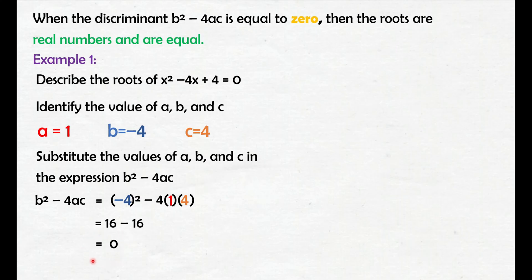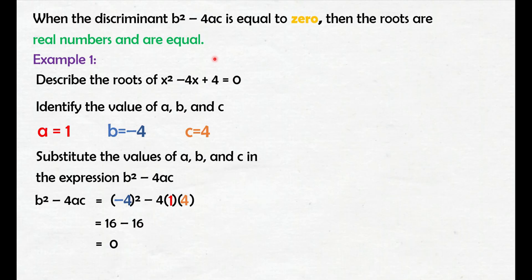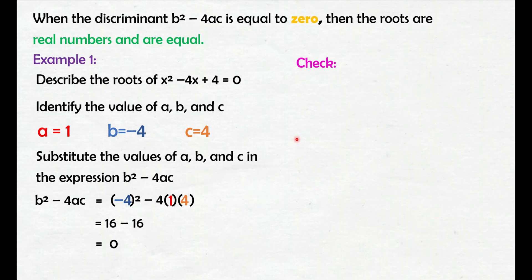Yung discriminant natin ay 0. Based dun sa definition natin, kapag yung discriminant natin ay 0, makakakuha tayo ng real numbers and are equal na roots or solutions. Alam na natin kung ano ba yung nature nung roots dito sa given quadratic equation na x squared minus 4x plus 4 equals 0. Pero para mas sure tayo, pwede rin natin i-check by using one of the methods about solving quadratic equation — by using the quadratic formula.